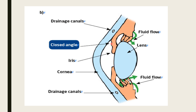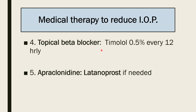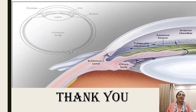In closed-angle glaucoma, dilation of the pupil narrows the angle and blocks the drainage canal. Medical therapy to reduce intraocular tension includes: first, hypertonic mannitol 20% or glycerol to decongest the eye by osmotic action; second, acetazolamide 0.5 g IV followed by oral twice daily concurrently; third, once intraocular tension starts falling, miotics — pilocarpine 1 to 4% instilled every 10 minutes initially then at longer intervals; and topical beta blocker like timolol 0.5%, apraclonidine, and latanoprost if needed. Thank you for watching the video.